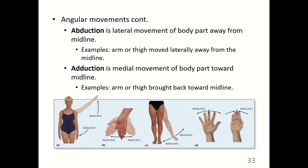Abduction and adduction occur in tandem. Abduction is the lateral movement of a body part away from the midline — 'abduct' means to take away — for example, when the arm or thigh is moved laterally away from the midline. Adduction is the medial movement of the body part back toward the midline — think of adding it back to the body — for example, when the arm or thigh is brought back toward the midline. Figure A shows abduction and adduction of the arm, figure B the wrist, figure C the thigh, and figure D the fingers.